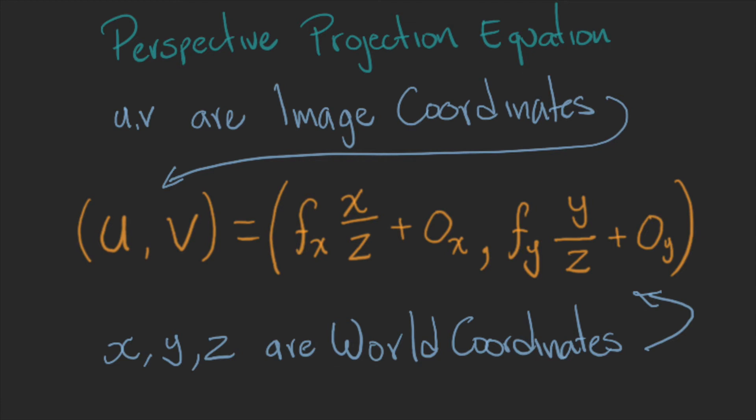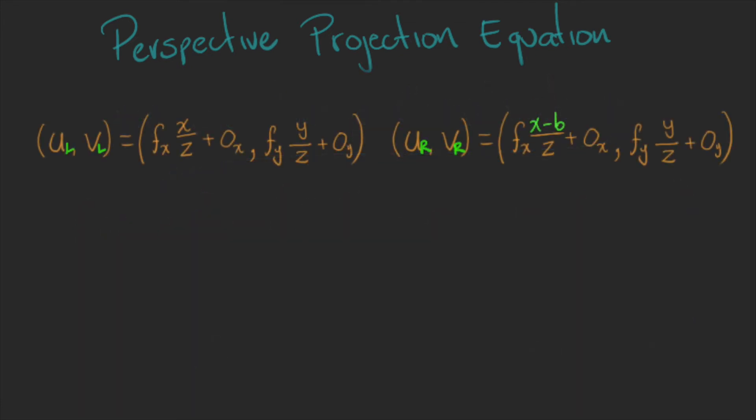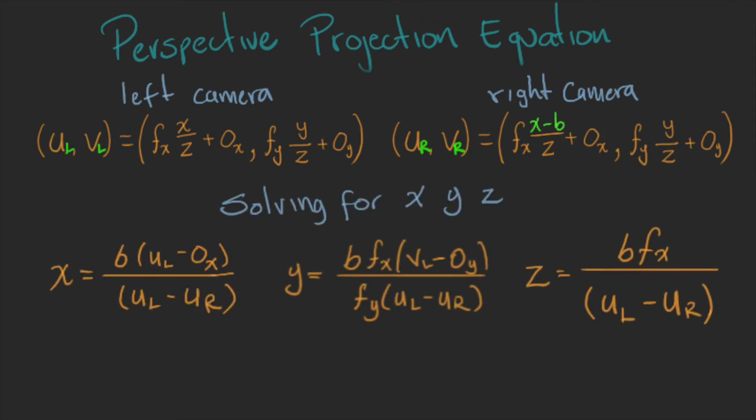With one single camera, we cannot find Z, but now that we have another set of U, V coordinates, we can solve for X, Y, and Z, and we obtain these three equations.